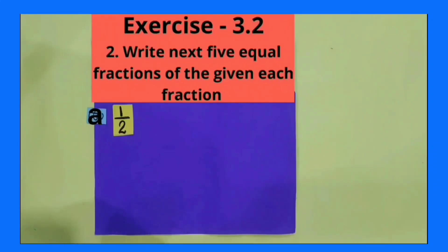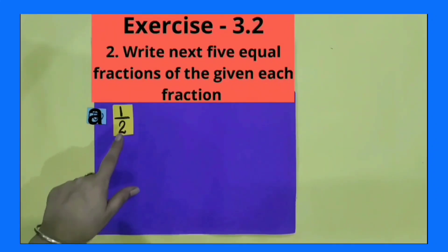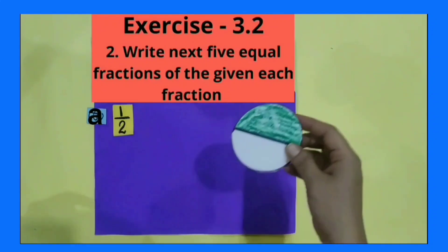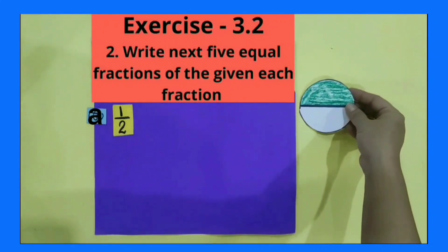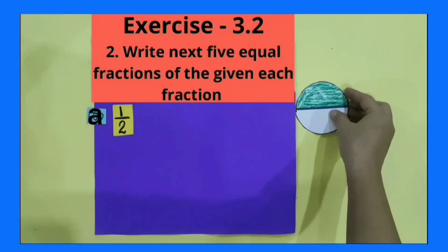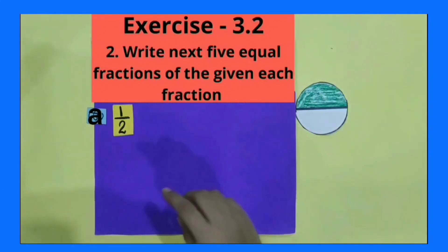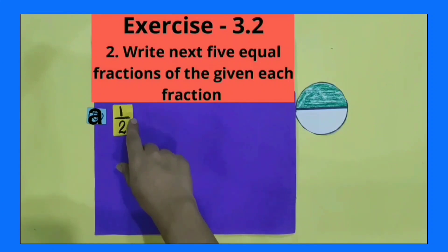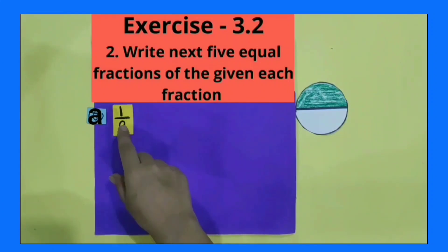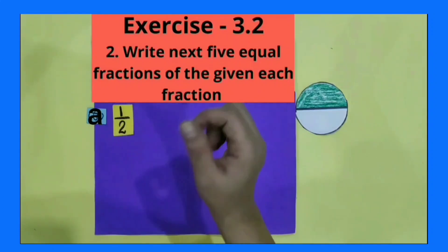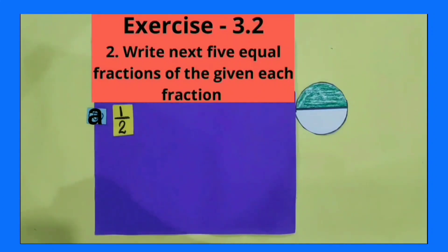Let's start. Part A. The fraction is 1 by 2, means 1 part out of 2 equal parts. 2 is our denominator and 1 is our numerator.